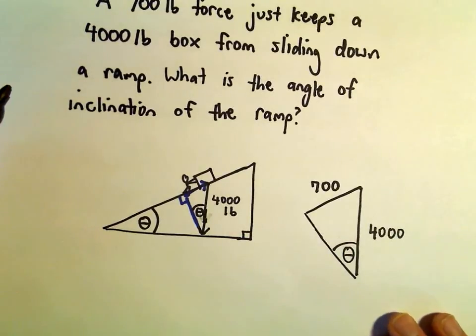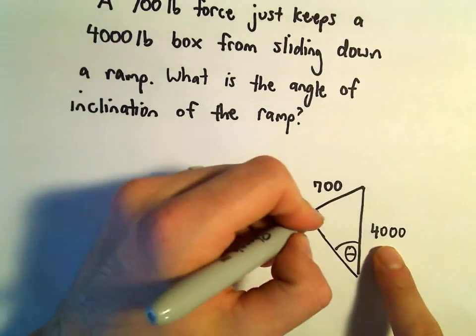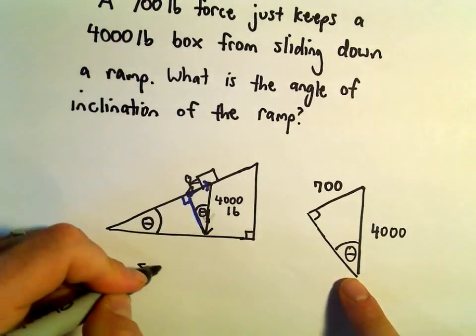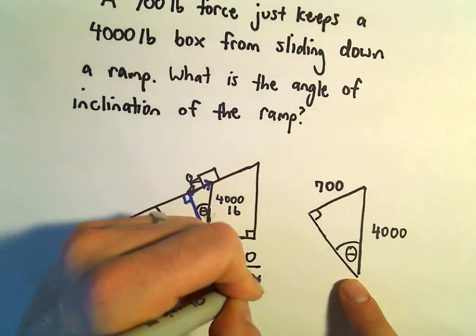So to figure out theta, let's see - we're given the opposite side, we're given the hypotenuse of our triangle. I think we could just say, sine of theta will be the opposite over the hypotenuse.